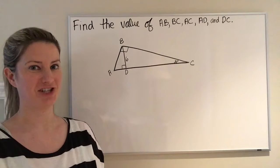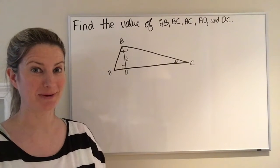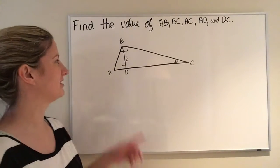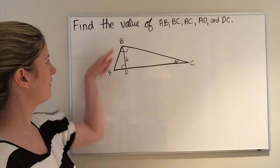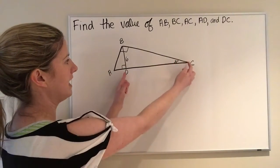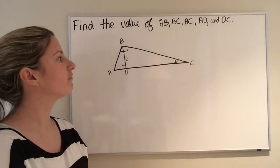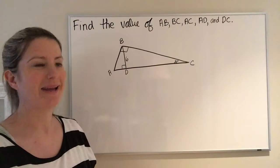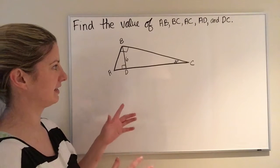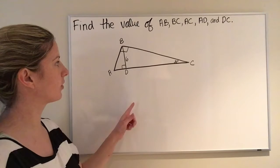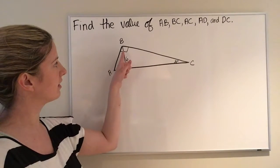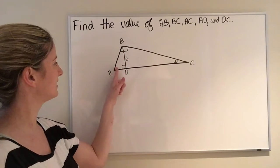Here's a very common problem given in geometry — I used to give problems like this to my students. I call it a triangle within a triangle using special right triangles. We want to find the values of AB, AD, BC, AC, and DC. The first thing to notice is triangle ABC has a 30-degree angle here and a 90-degree angle here, which means this is a 60-degree angle.